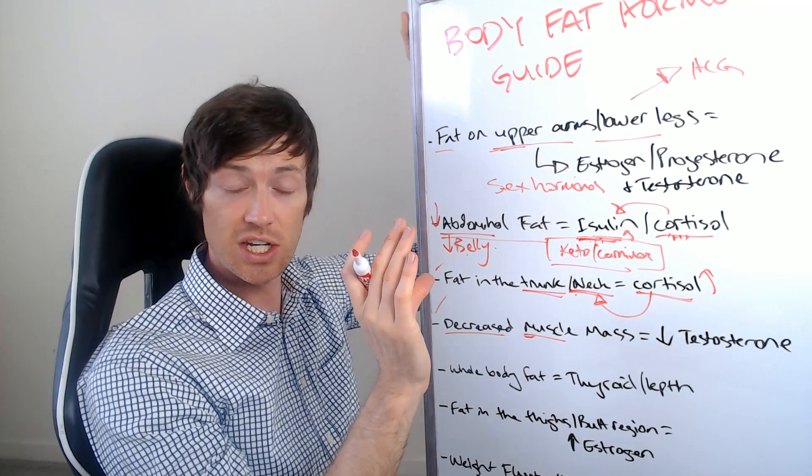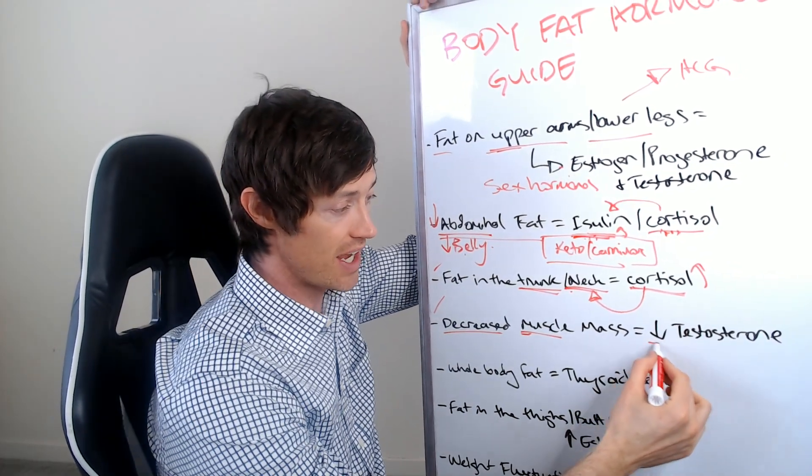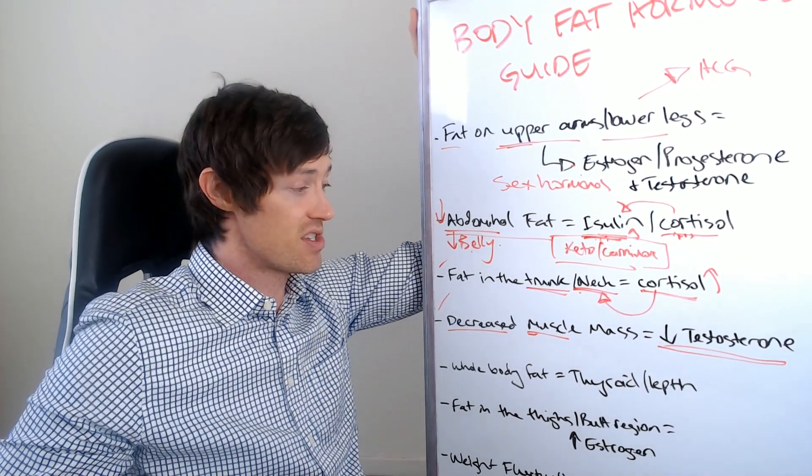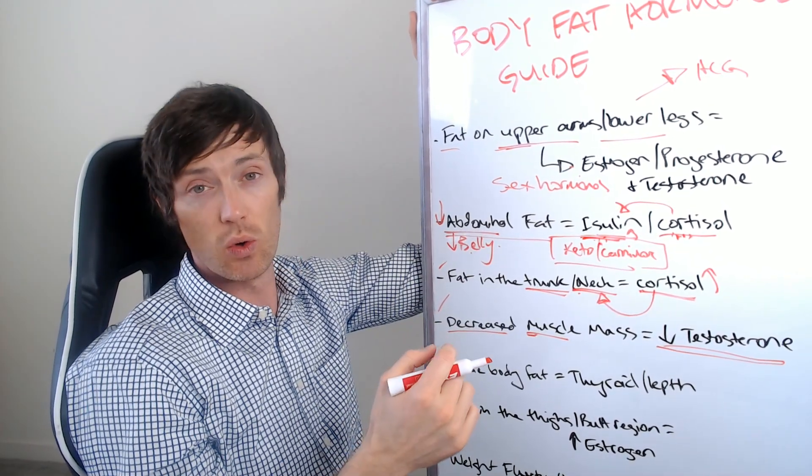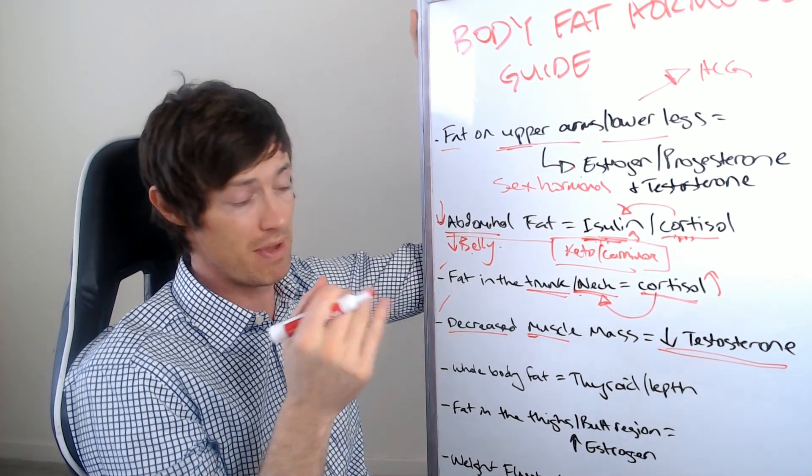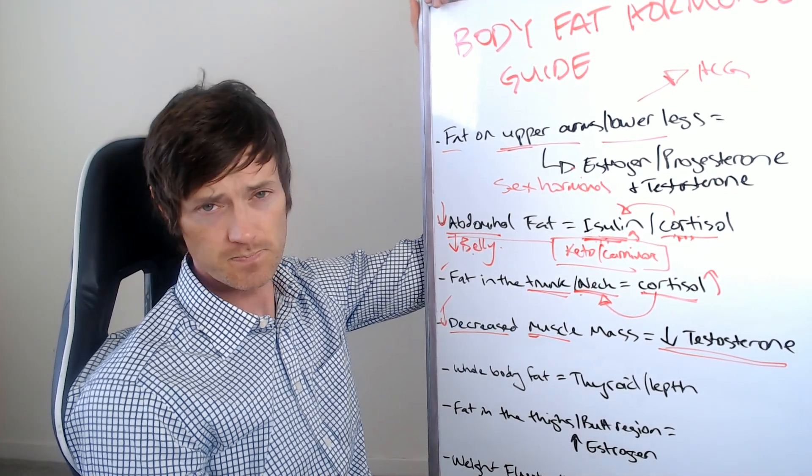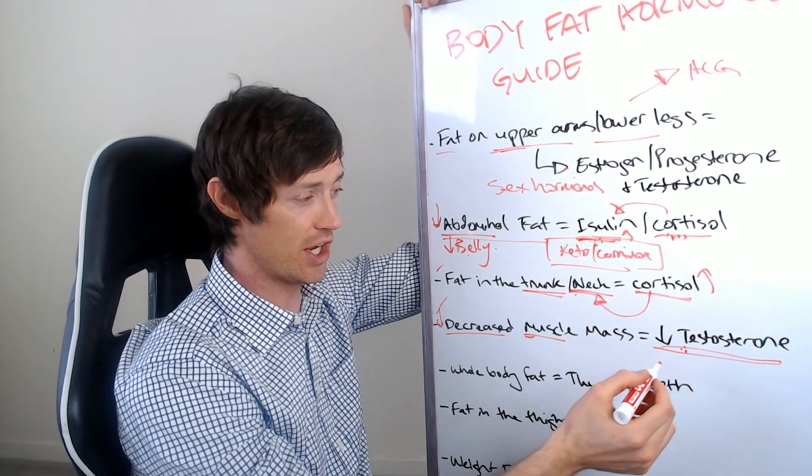And by the way, if you're not doing anything but you're seeing your muscle mass shrink or reduce over time, that is most likely a sign that you have decreased testosterone in both men and women. Testosterone is important for regulating how much muscle mass you have. And so low testosterone, which again is important in men and women, can cause this decrease in muscle mass or what we call atrophy of the muscles.